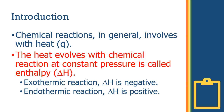As we learned, chemical reactions in general involve heat. The heat involved in a chemical reaction at constant pressure is called enthalpy. There are two types: exothermic reactions give delta H as a negative value, and endothermic reactions give delta H as a positive value.